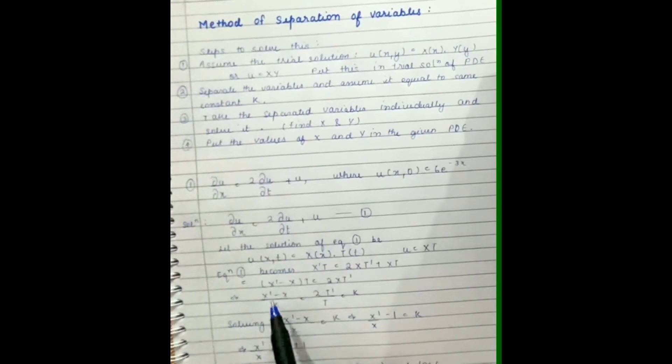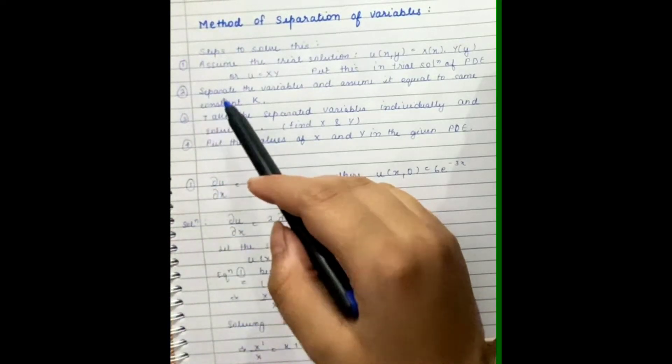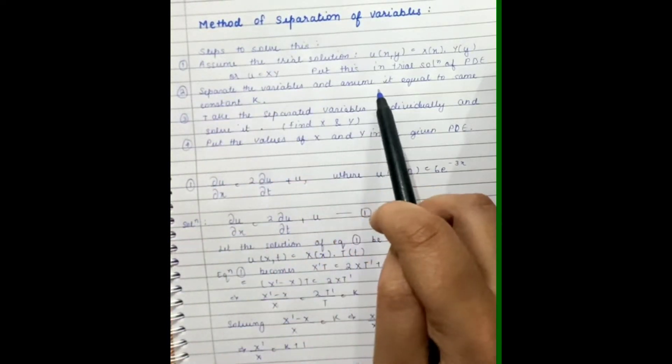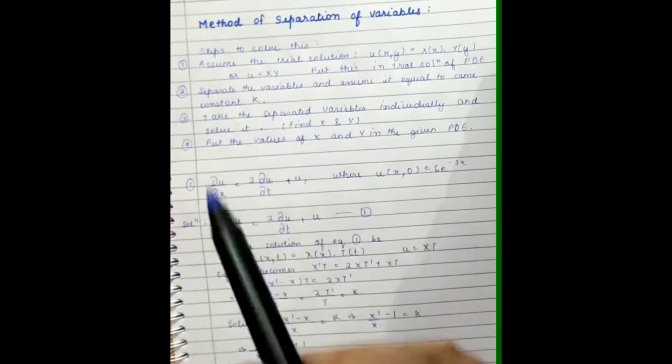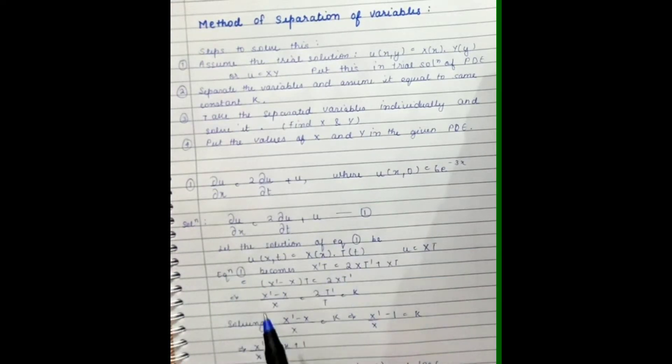Now we have to separate the variables and assume it equal to the same constant k. So we are separating the variables, that is X on one side and T on one side, and we are equating it to the same constant k.